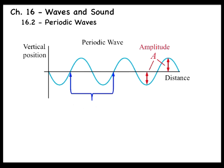The wavelength lambda is the horizontal length of one cycle of the wave. The wavelength is also the horizontal distance between two successive crests, two successive troughs, or any two successive equivalent points on the wave.